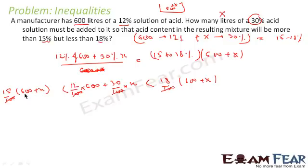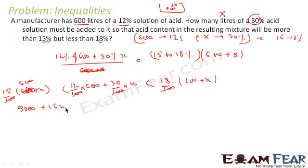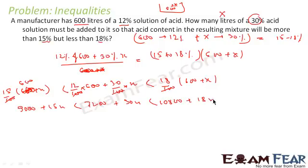Multiplying through by 100, the denominators cancel. So now we solve: 15 into 600 is 9000, plus 15x, is greater than 12 into 600 which is 7200, plus 30x. And on the other side: 18 into 600 is 10800, plus 18x.